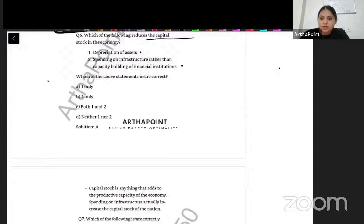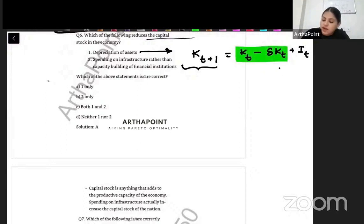Whenever there is depreciation, right? So if you have gone ahead and seen whenever there is depreciation of the asset. So if you remember capital stock at the period KT plus 1, if it is a Solow model, what is the capital at the period T plus 1? It is the capital at the period T minus depreciation of capital plus investment done during this period. So depreciation always reduces capital. So 1 is correct.